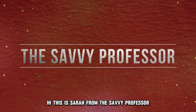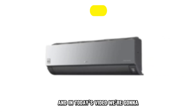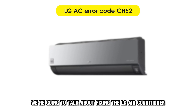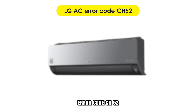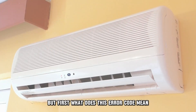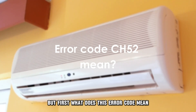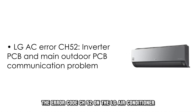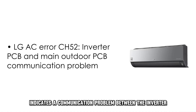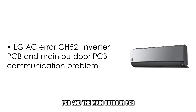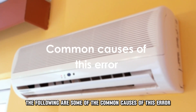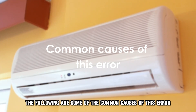Hi, this is Sarah from The Savvy Professor, and in today's video, we're going to talk about fixing the LG air conditioner error code CH52. But first, what does this error code mean? The error code CH52 on the LG air conditioner indicates a communication problem between the inverter PCB and the main outdoor PCB. The following are some of the common causes of this error.